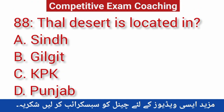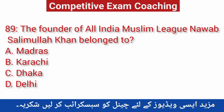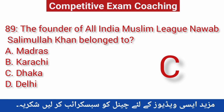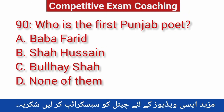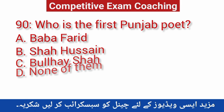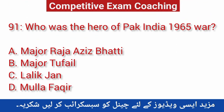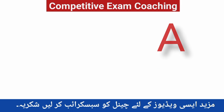Question number eighty-eight: Thal Desert is located in? Correct answer is D — Punjab. Question number eighty-nine: The founder of the All India Muslim League, Nawab Salimullah Khan, belonged to? Correct answer is C — Dhaka. Question number ninety: Who is the first Punjabi poet? Correct answer is A — Baba Farid. Question number ninety-one: Who was the hero of the Pakistan-India 1965 war? Correct answer is A — Major Raja Aziz Bhatti.